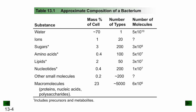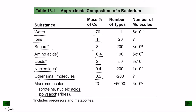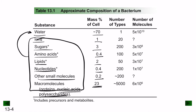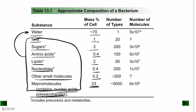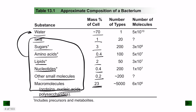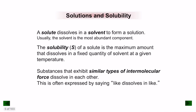Looking at the approximate composition of a bacterium: water makes up about 70% of the mass, ions 1%, sugars 3%, amino acids 0.4%, lipids 2%, nucleotides 0.4%, other small molecules 0.2%, and proteins, nucleic acids, and polysaccharides about 23%. All of these components are dissolved in water, which is the main ingredient. This is the general composition of a bacterium and illustrates what a solution looks like.